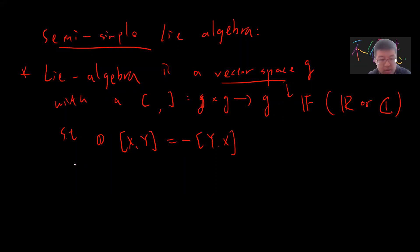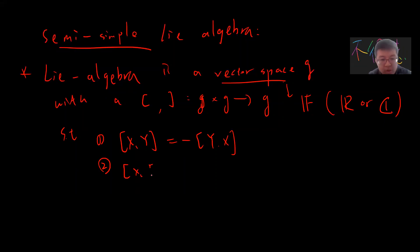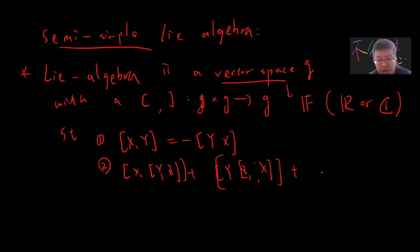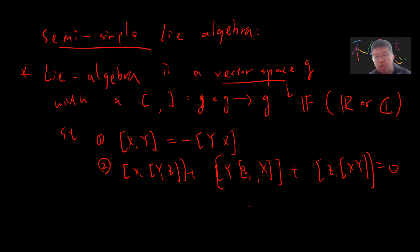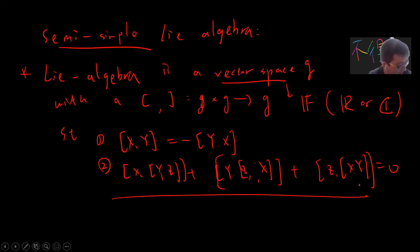The second property is the so-called Jacobi identity: [x, [y, z]] plus [y, [z, x]] plus [z, [x, y]] equals zero. This is called the Jacobi identity.